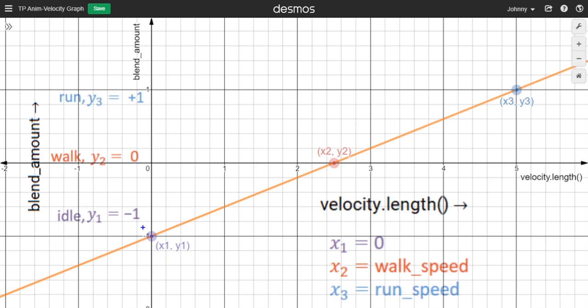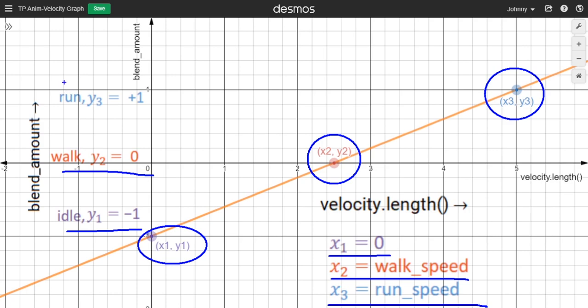In this line, the first point has a velocity of idle state as x and the blend value of idle state as y. Similarly, the second point has velocity of walk state as x and the blend value of walk state as y. And the third point has the velocity of run state as x and the blend value of run state as y.